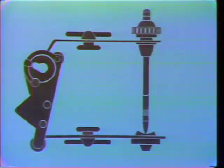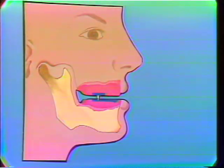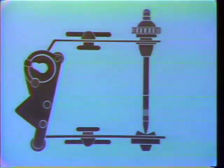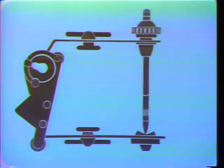The face bow may be called a kinematic face bow because it moves with the lower jaw. It serves two purposes: one, for the transfer of the relation of the plane of occlusion to the temporomandibular joints, whether you use an arbitrary or the true hinge axis, which can be located with this face bow; and two, it is used to trace the sagittal condylar path.